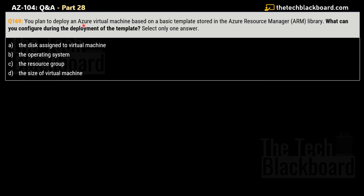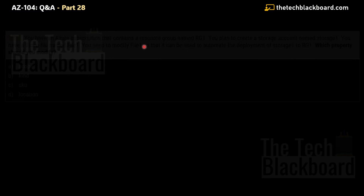Question number 169: You plan to deploy an Azure virtual machine based on a basic template stored in the Azure Resource Manager template library. What can you configure during the deployment of the template? Options: A) The disk assigned to the virtual machine, B) The operating system, C) The resource group, D) The size of the virtual machine. The correct answer is option A — the disk assigned to the virtual machine. When deploying resources using ARM templates, you can specify the resource group, and all Azure resources must reside under a resource group.